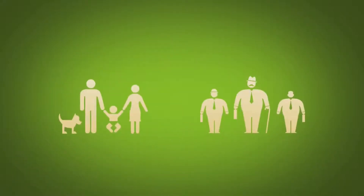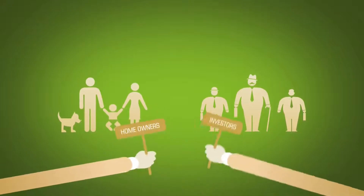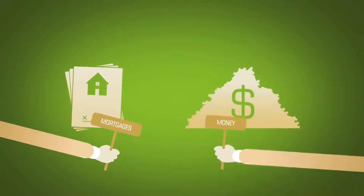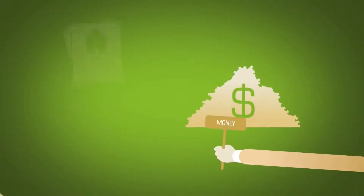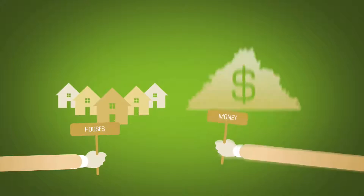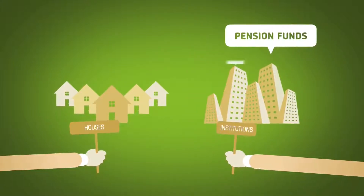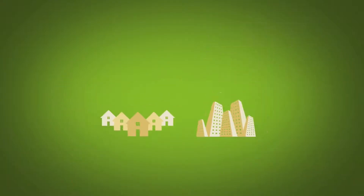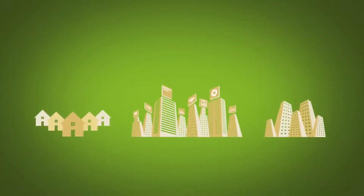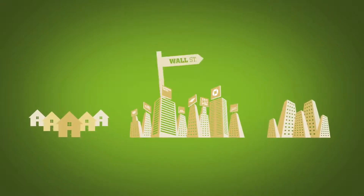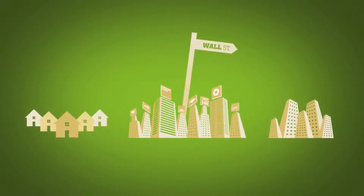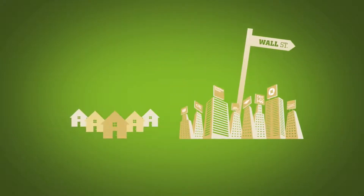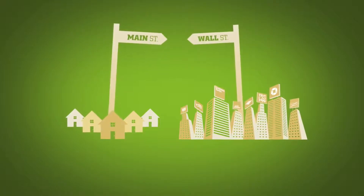The credit crisis brings two groups of people together: homeowners and investors. Homeowners represent their mortgages and investors represent their money. These mortgages represent houses, and this money represents large institutions like pension funds, insurance companies, sovereign funds, mutual funds, etc. These groups are brought together through the financial system — a bunch of banks and brokers commonly known as Wall Street. While it may not seem like it, these banks on Wall Street are closely connected to these houses on Main Street. To understand how, let's start at the beginning.